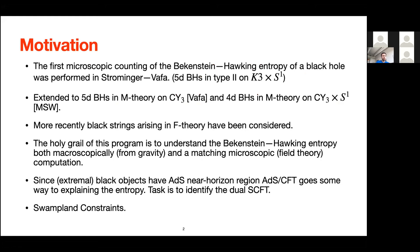The basic motivation was to look at microscopic counting of the Bekenstein-Hawking entropy for some classes of black holes. The holy grail of this program is to have some gravity computation — the macroscopics — matched with a microscopic field theory computation, and hopefully they agree. This would give an idea of how the microstates of the black hole are encoded in some field theory. The first example was done by Strominger and Vafa in '96, where they looked at 5D black holes in type IIB, putting these black holes on K3 times S1.